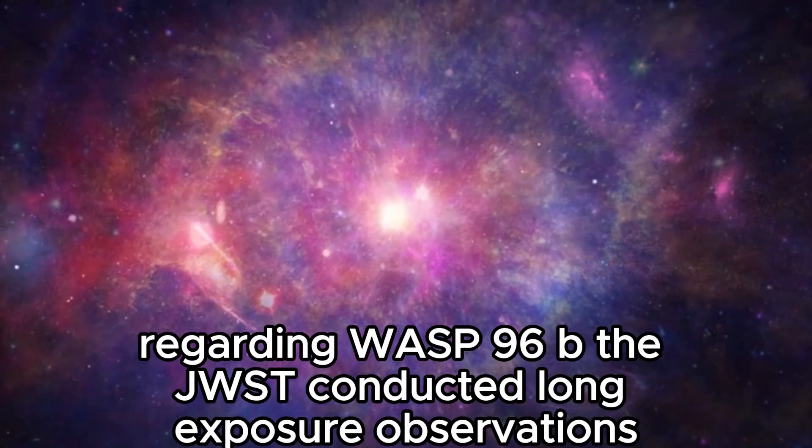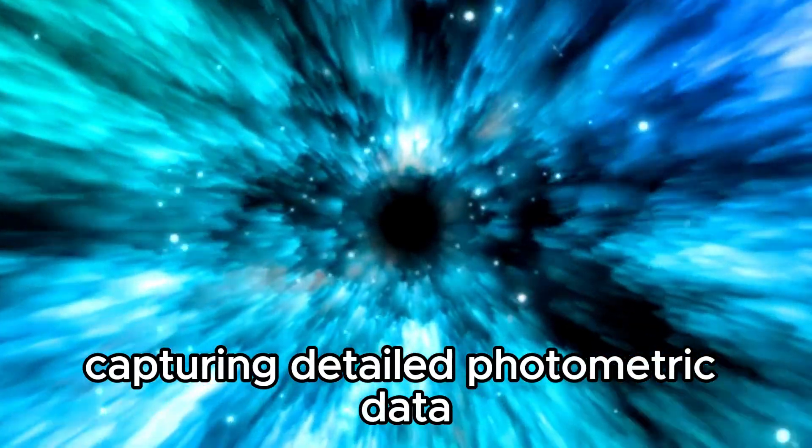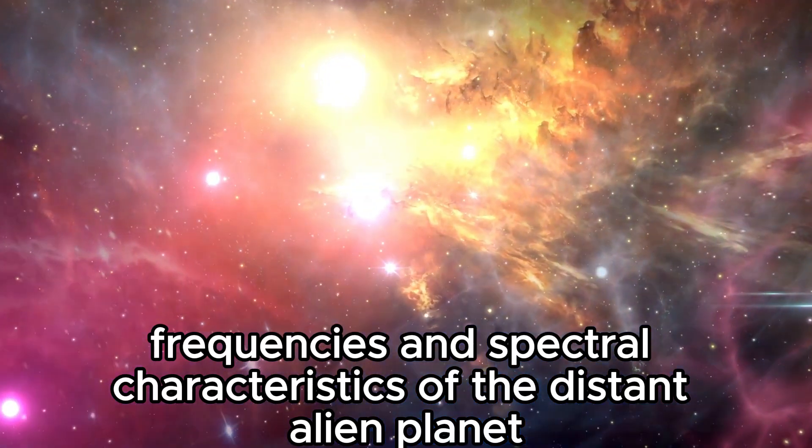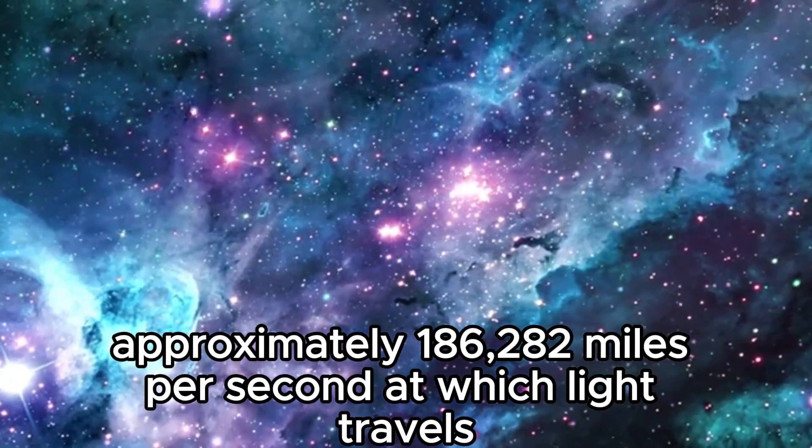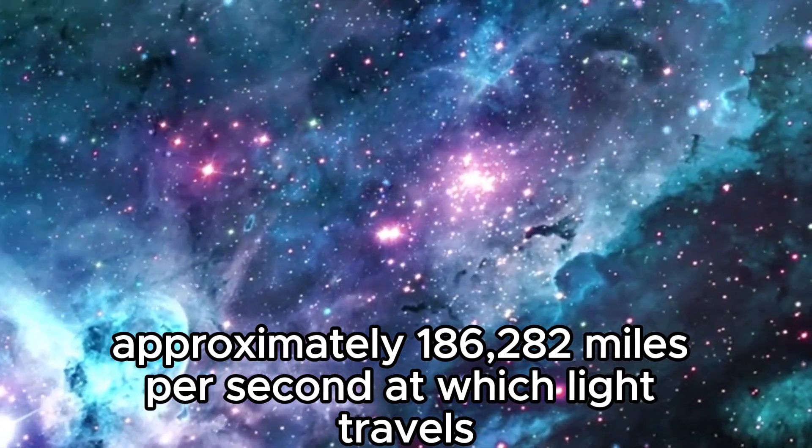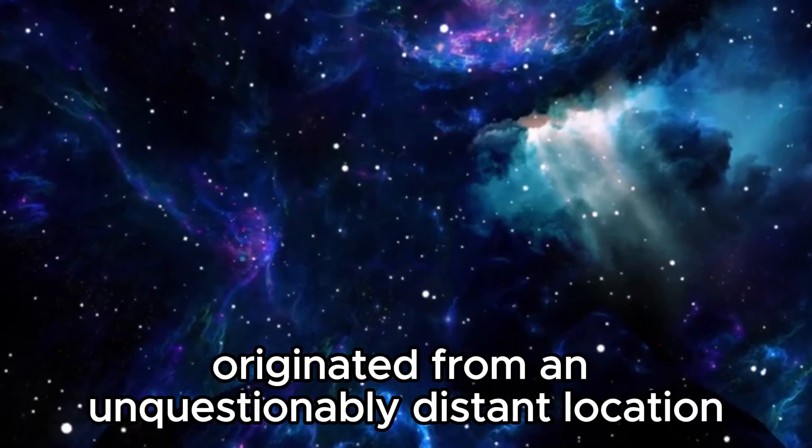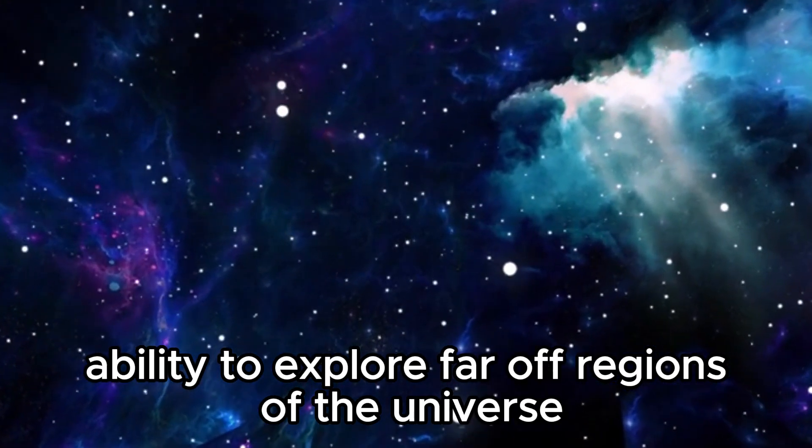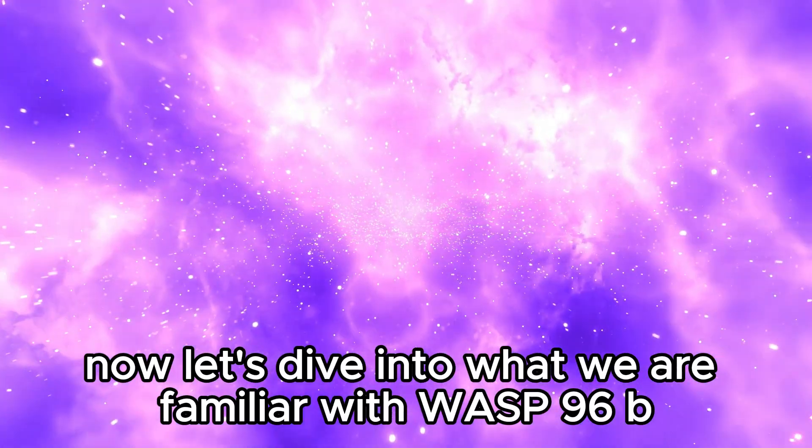Regarding WASP-96b, the JWST conducted long-exposure observations, capturing detailed photometric data shedding light on the power frequencies and spectral characteristics of the distant alien planet. Considering the huge distance, approximately 186,282 miles per second at which light travels, the lights observed by the JWST originated from an unquestionably distant location, showcasing the telescope's ability to explore far-off regions of the universe.